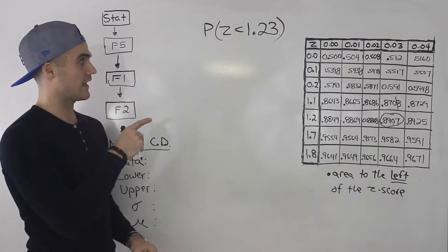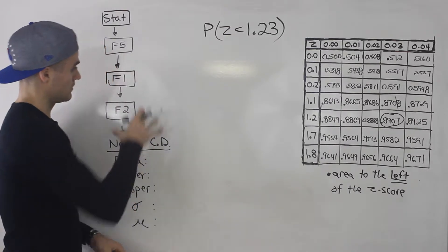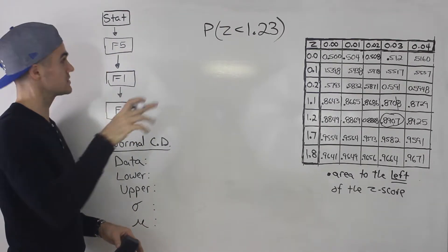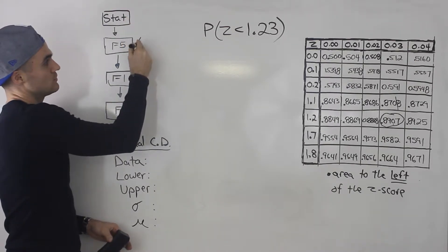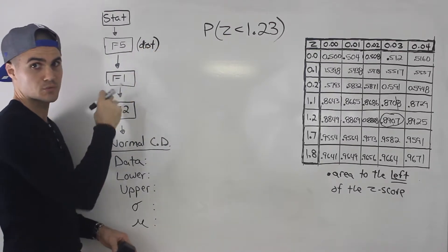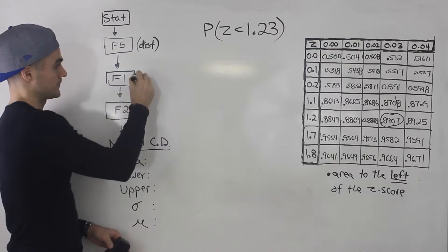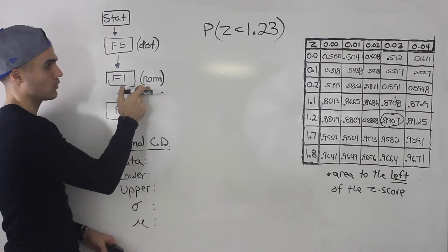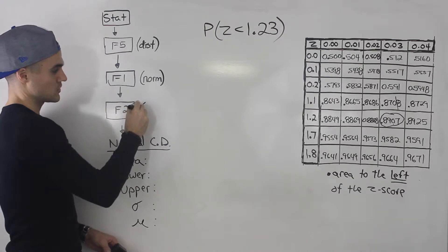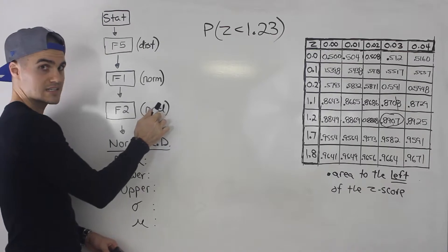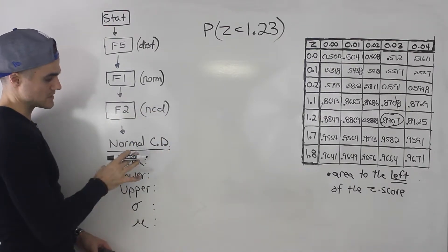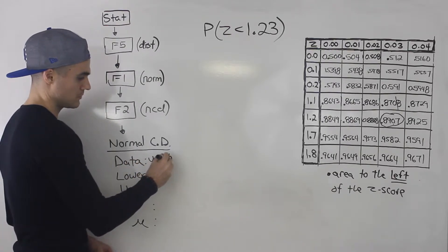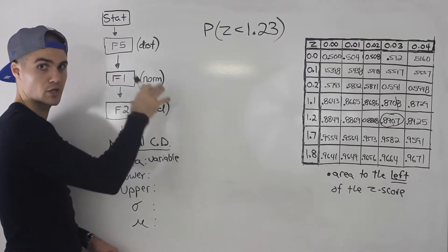Now, if you were to find that same probability using a stats calculator, these are the steps. From the main menu, hit Stat. You'll see different options — hit Stat, then F5. F5 brings you to distribution, labeled DIST. Then hit F1, which takes you to the normal distribution, labeled NORM. After that, hit F2 for NCD, which stands for normal cumulative distribution. You'll get to an input screen — make sure the data field is set to Variable, meaning we're just using the normal distribution, not a specific list.